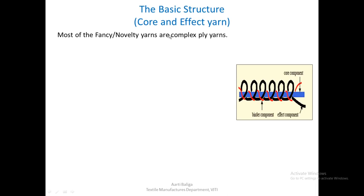The basic structure of a fancy yarn consists of the core and the effect yarn. The core component is shown in blue, the effect component in black, and the binder component in red. Most fancy novelty yarns are complex ply yarns — the moment we introduce certain textural features into a ply yarn, it becomes called a fancy or novelty yarn.